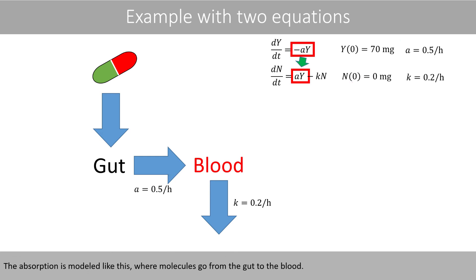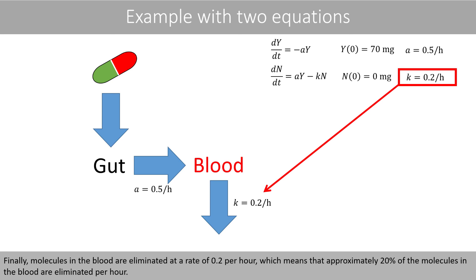Watch the video about exponential growth to understand why I say approximately to interpret the coefficient. The absorption is modeled like this, where molecules go from the gut to the blood. Finally, molecules in the blood are eliminated at the rate of 0.2 per hour, which means that approximately 20% of the molecules in the blood are eliminated per hour.